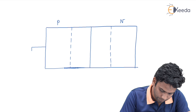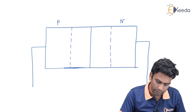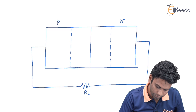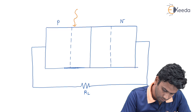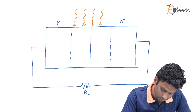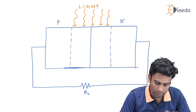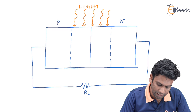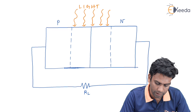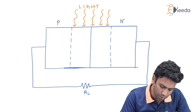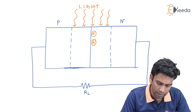Let us connect the p-type and the n-side by a resistor R_L. Now, let the light be incident on this depletion layer. Since the light is incident on this depletion layer, the photon particle energy will be absorbed by the semiconductor, and hence some amount of electron-hole pairs will be generated inside the depletion region.